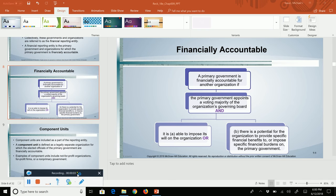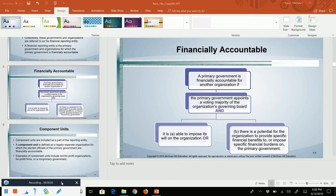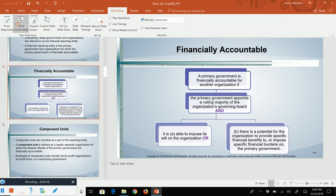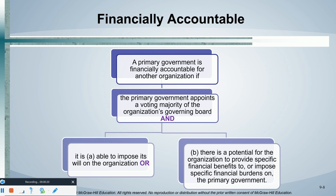Hello, everyone. In this particular lecture, we are going to wrap up our studies of governmental accounting. We worked through various chapters — first, a macro view of governmental accounting, where we talked about the different types of funds, the different types of financial statements, the difference between the government-wide financial statements versus the fund financial statements, and the type of accounting: accrual versus modified accrual.